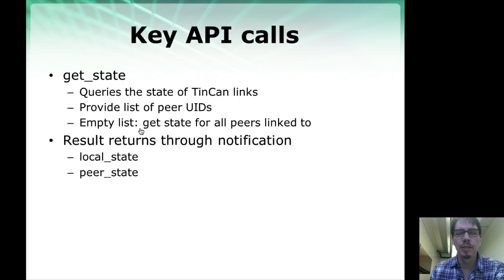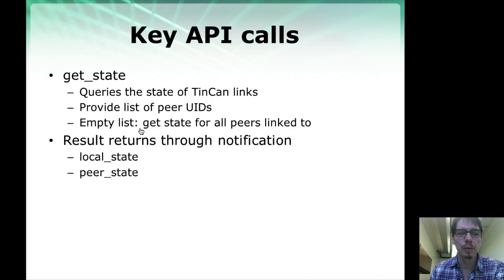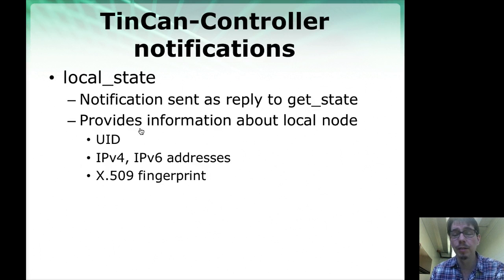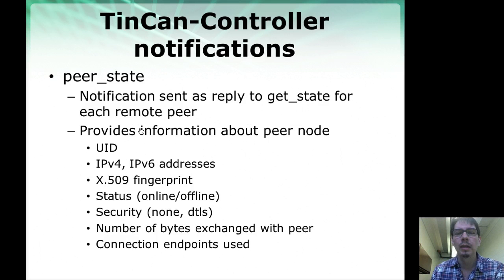GetState queries the state of Tincan links. This is useful for building statistics about peers you're connected with, how many packets have been transferred, and other information. It requests state and results in a number of calls coming back from Tincan up to the controller: local state for the local node, and peer state for every peer the node is connected to. Local state provides the node's ID, IPv4 and IPv6 addresses, and fingerprint. Peer state tells about every connected peer — their status (online or offline), whether security is being used, how many bytes have been exchanged, and what connection endpoints are being used.